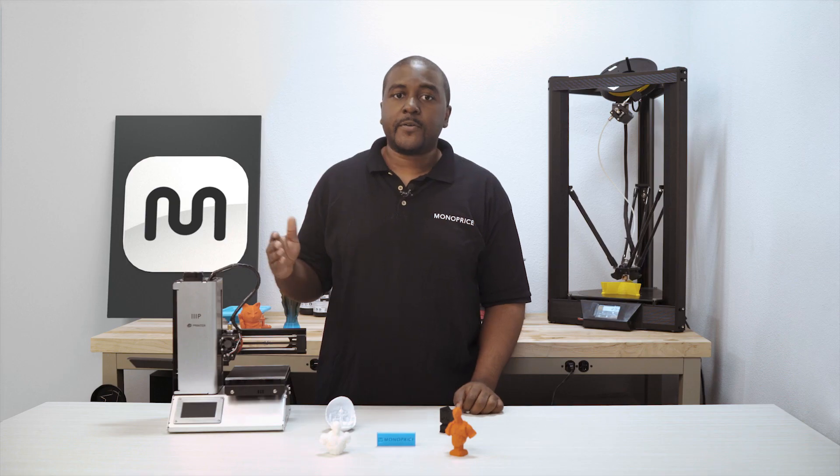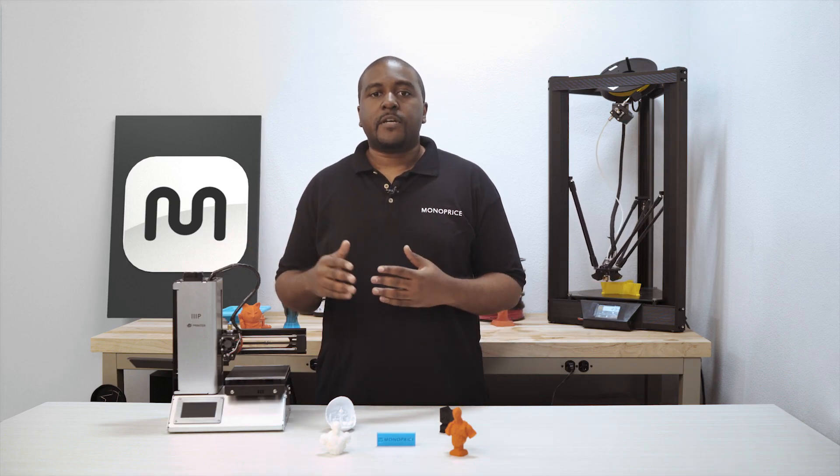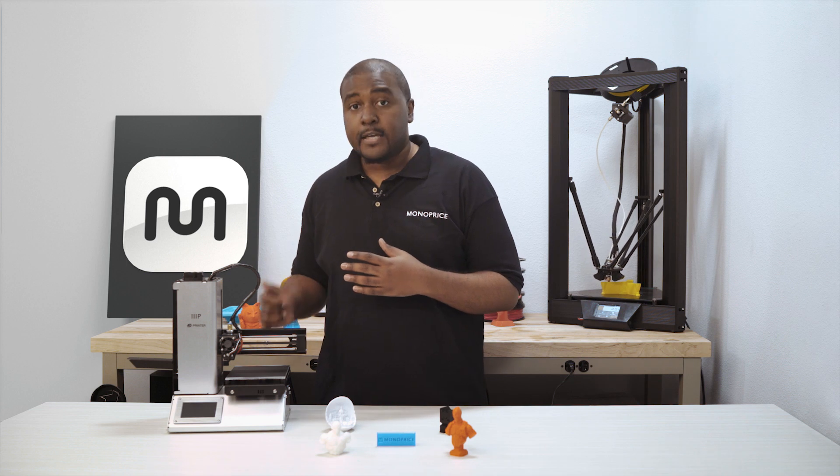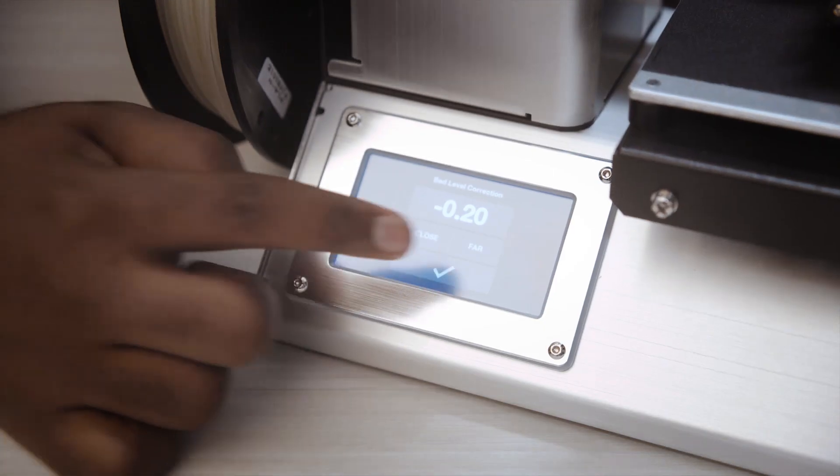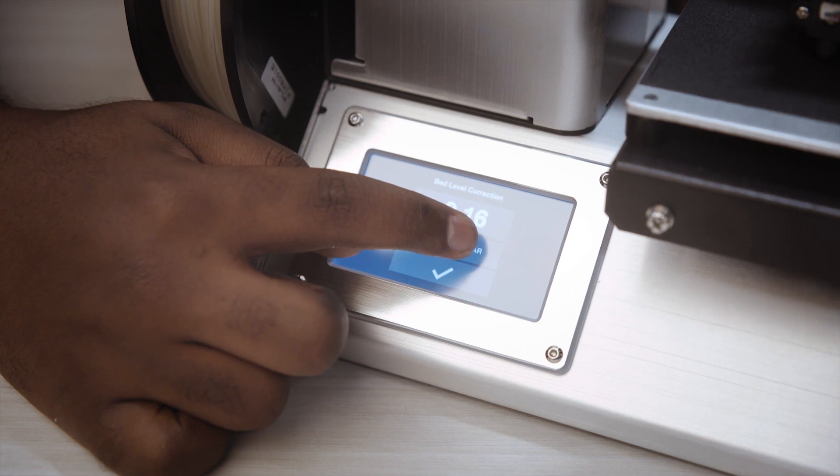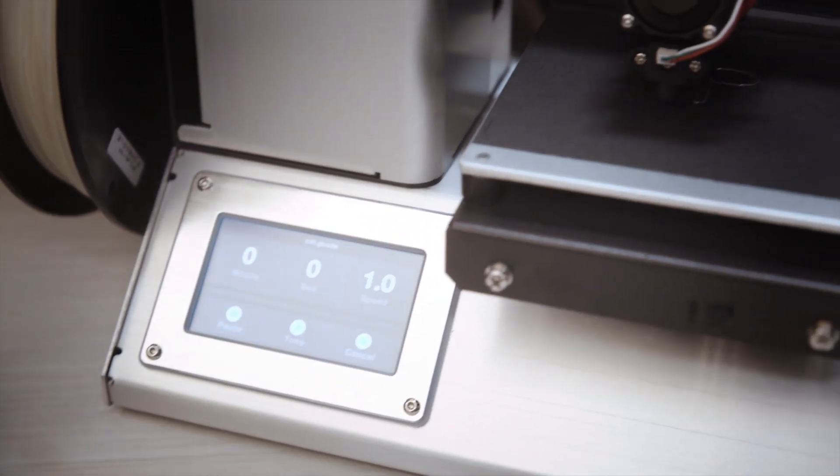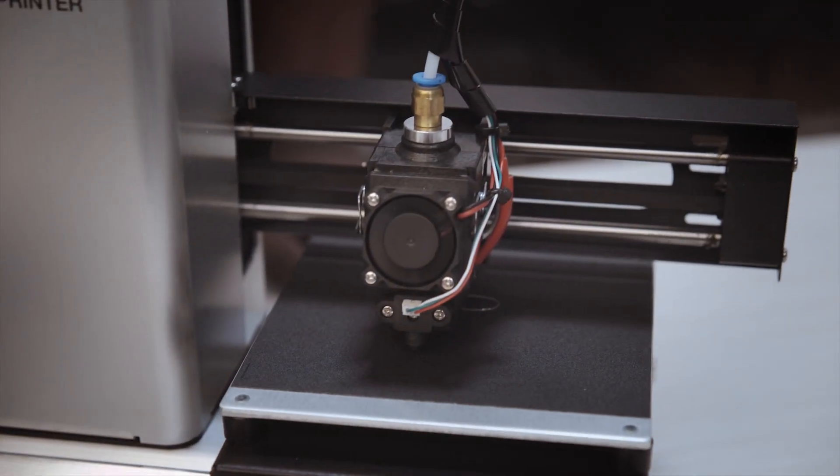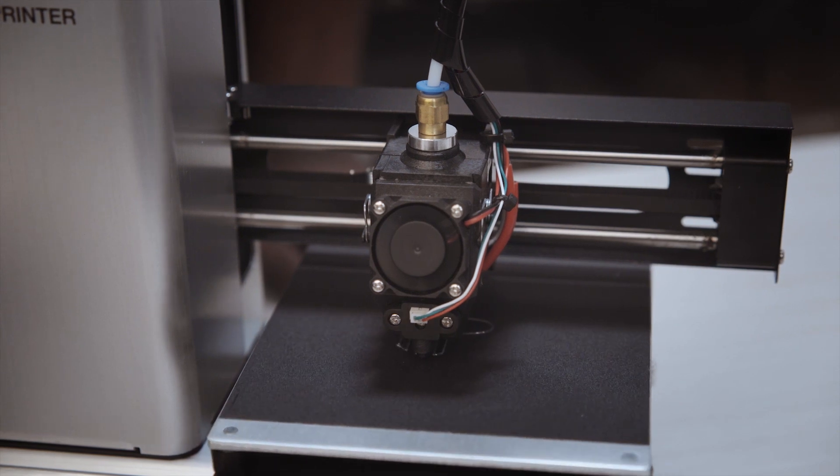Furthermore, the printer is now featuring the ability to adjust the Z height on the fly. So if you're in the middle of a print, you will be able to adjust the height of the nozzle if you feel that it is offset a bit too high or too low in the middle of the print.